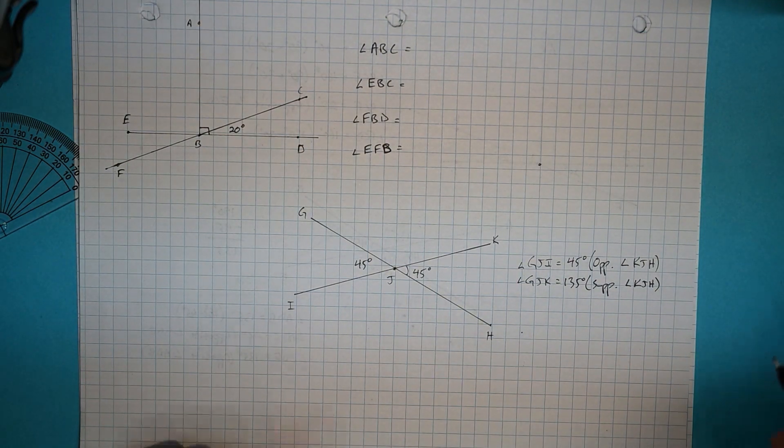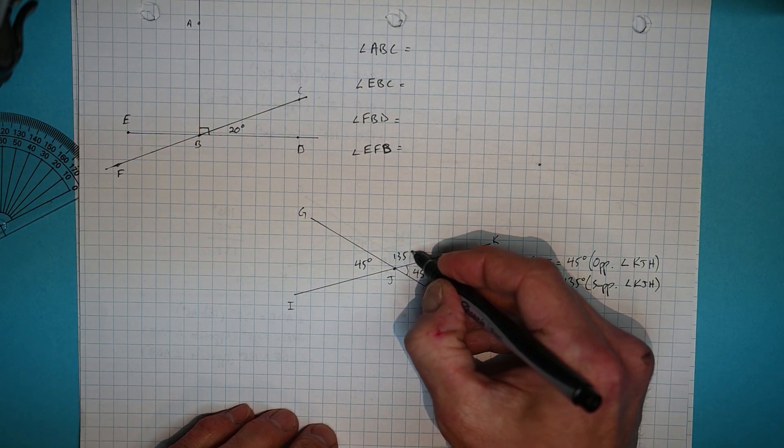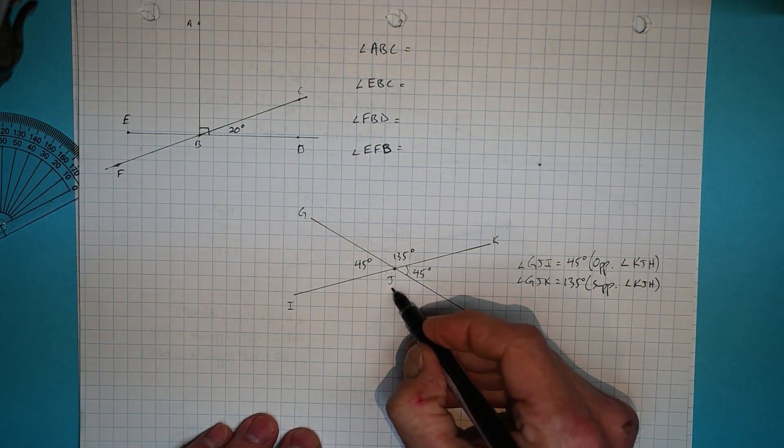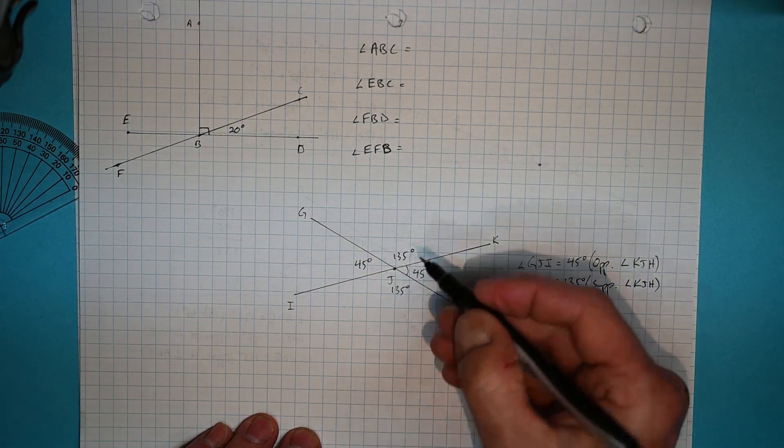And once you know that that's 135, what else do you already know? Exactly. You know the angle on the other side because it's opposite.